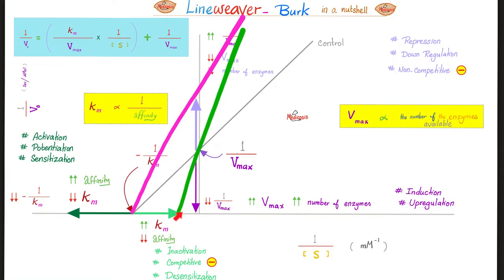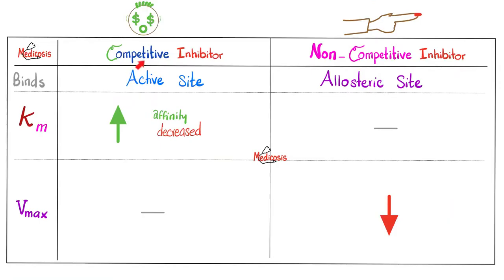Note that with competitive inhibitors, both lines — the control and the competitive — intersect on the y-axis. But with Nancy the Karen, the non-competitive inhibitor, both lines intersect on the x-axis. Competitive inhibitors bind to the active site, non-competitive to the allosteric site. With competitive inhibitors, affinity went down so Km went up, but Vmax did not change. With non-competitive inhibitors, Km will not change, Vmax will go down.